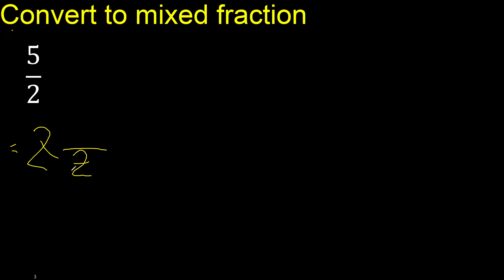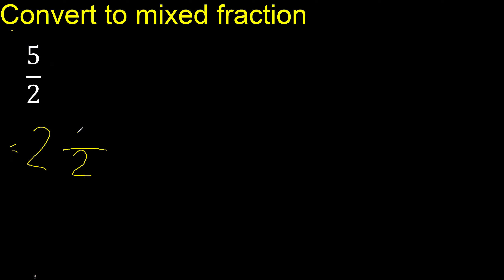2 multiplied by 2 is 4. 5 minus 4 is 1. 1 is here. Finish.